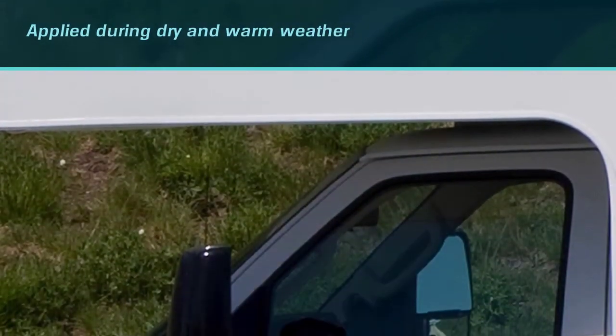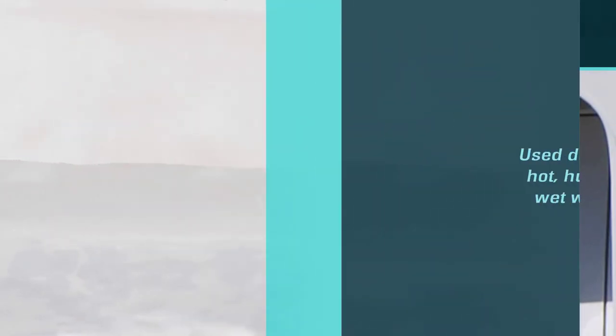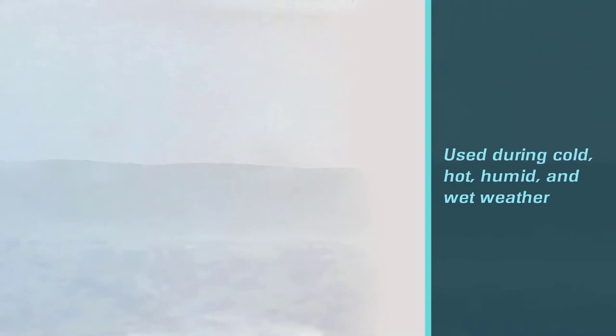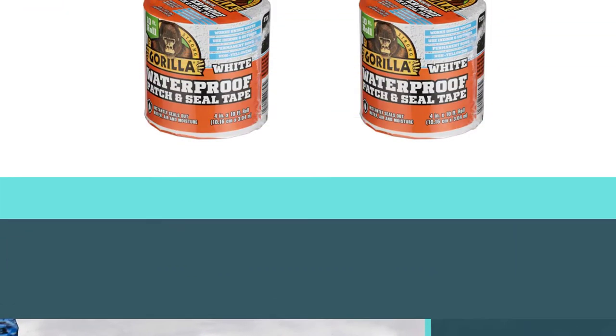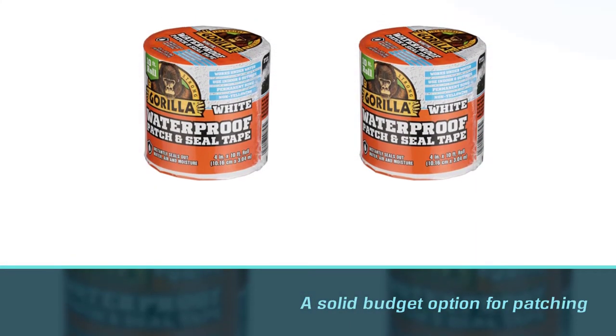While it works best if applied during dry and warm weather, it can be used during cold, hot, humid, and wet weather as well. It can even be applied underwater. Gorilla seal tape is a solid budget option for patching small sections of damaged roofing.